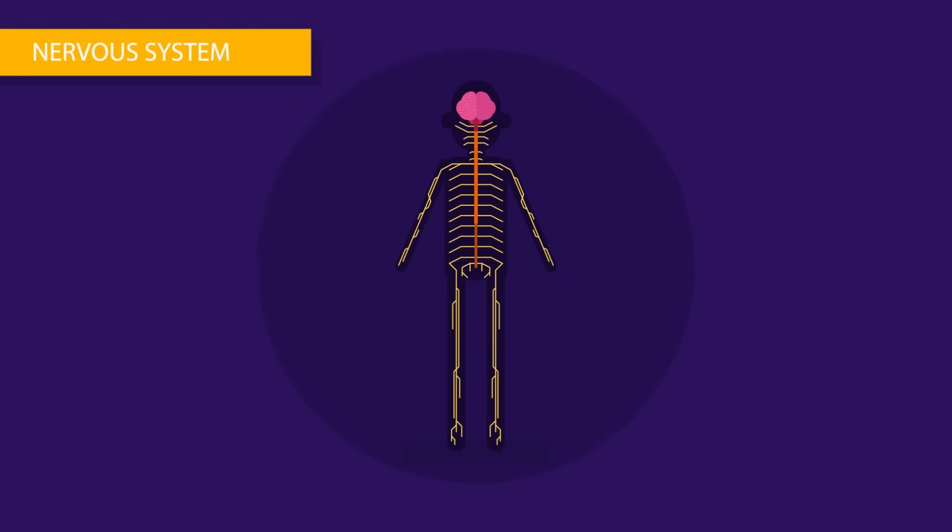The central nervous system comprises the brain and spinal cord. The spinal cord is the bridge that connects the brain to peripheral nervous system. It starts from medulla oblongata and stretches to lumbar region of the spine or vertebral column.